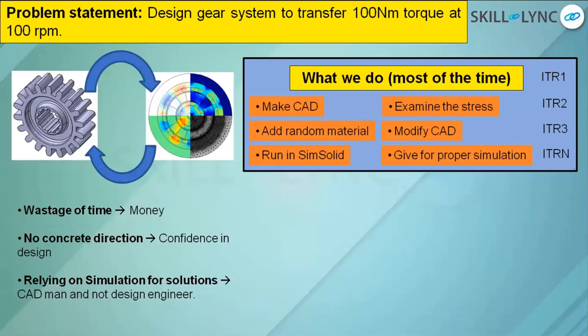Engineers in earlier stages used to do a lot of calculations — free body diagrams, kinematic calculations, lump mass models, stress-strain curve calculations, and acceleration versus time graphs. All these were tested and taken into consideration for calculation. They used proper engineering calculation.